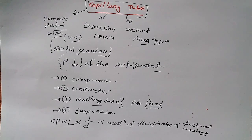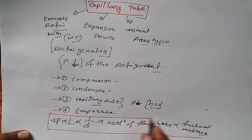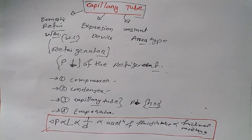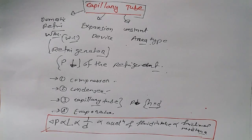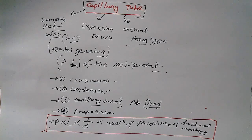This equation is most important, especially if you are preparing for any competitive examination. In case of a constant area type capillary tube, pressure drop is inversely proportional to the diameter. If you know the equation, you can easily solve the question in seconds. Thanks for watching — hope to see you again in my next video.